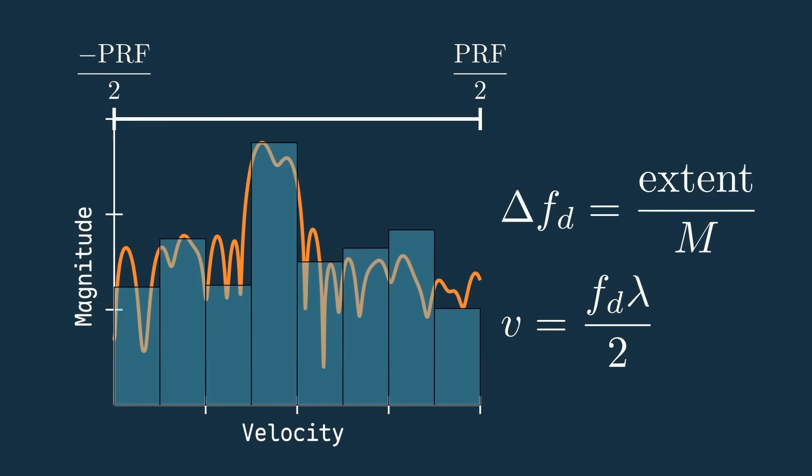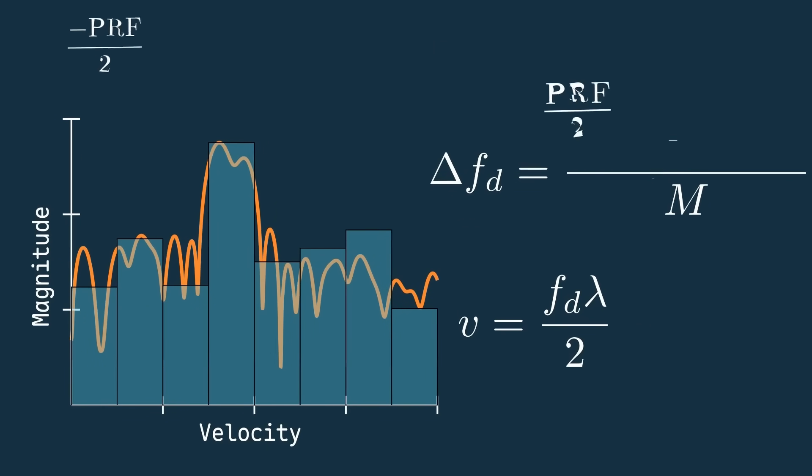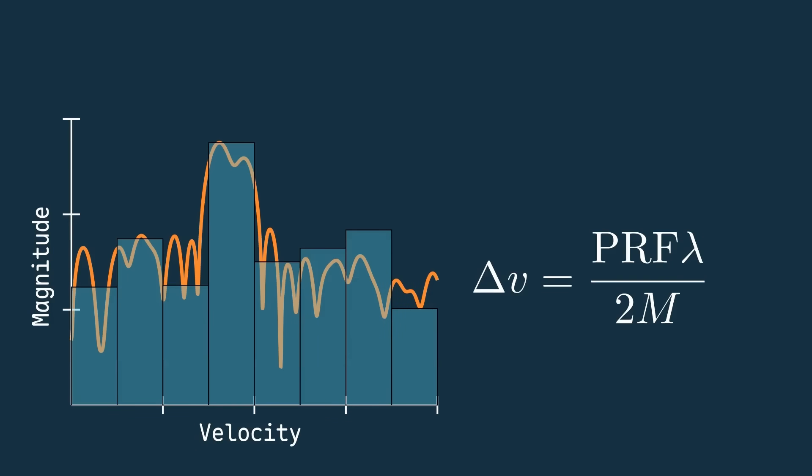Putting this all together, we can see that the extent would be PRF over 2 minus negative PRF over 2, which just simplifies to the PRF. Divided by m gives you the frequency difference between each of these cells. From here, that can then be plugged into this frequency term to get the final velocity resolution.